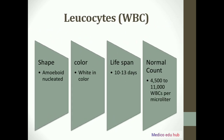In this slide we will learn about leukocytes, commonly known as WBC or white blood cells. Number one is shape: the shape of WBC is amoeboid and nucleated — WBCs are freely wandering cells, meaning they don't have a particular shape. Next is color: the color of leukocytes is white because WBCs do not contain hemoglobin. The lifespan of WBC is 10 to 13 days, which is shorter than RBC. The normal count of WBC is 4,500 to 11,000 WBCs per microliter.